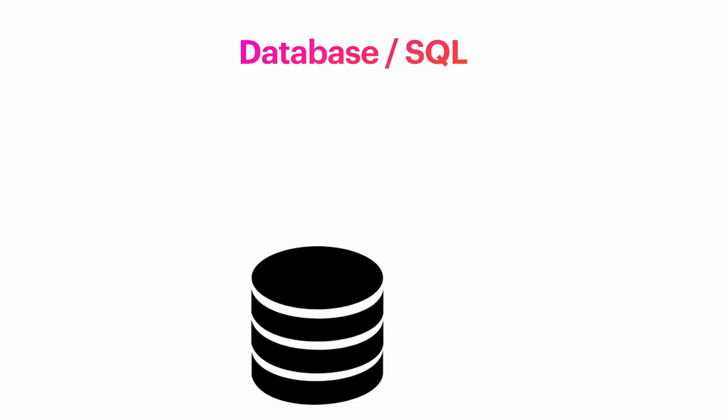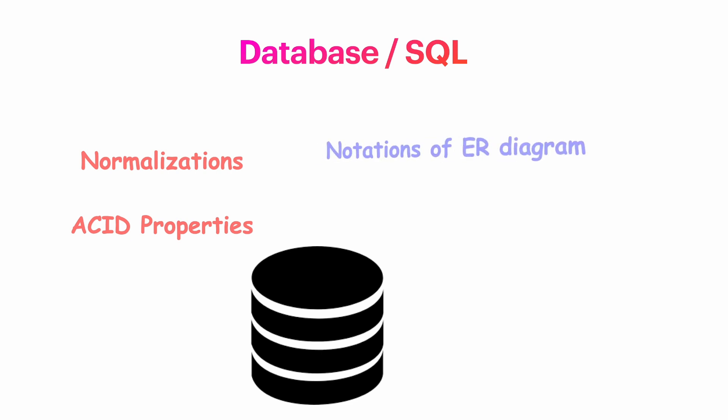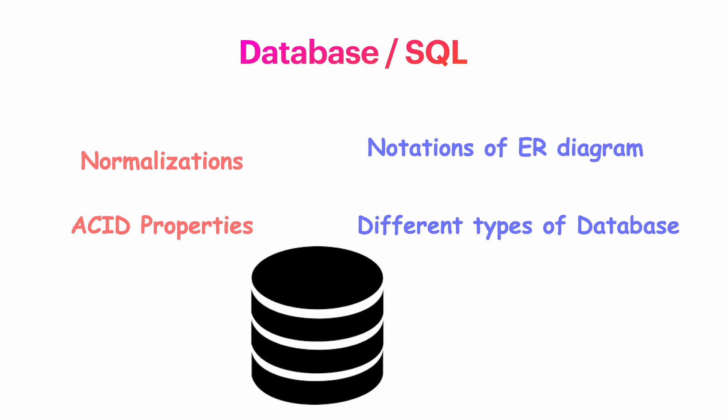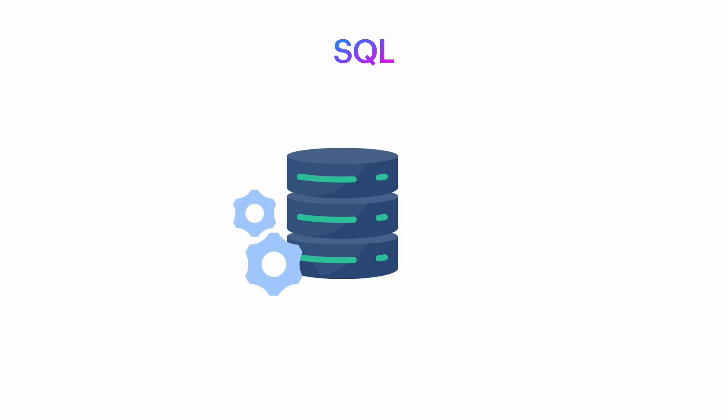Now let's move to the database section. In my interview, 47 minutes went on database — they questioned me thoroughly. Database plays a crucial role in TCS Digital, arguably more than DSA based on my experience. You need to prepare normalization, including 1NF, 2NF, BCNF, and the differences between them. They will also ask about ACID properties — there are four, make sure you know them well. They asked about notations of ER diagrams, specifically the four notations for composite attributes. Also prepare the different types of databases and the difference between a database and a Database Management System.